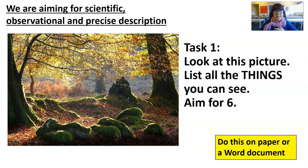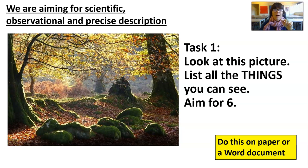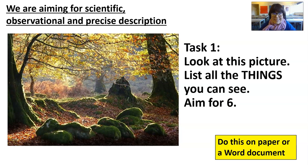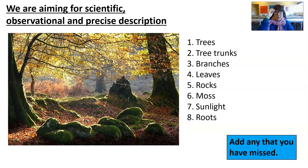You're going to do some tasks as I walk you through this video. There's also a sheet attached to the video description in Microsoft Streams that you can use as well. First, on a piece of paper or a Word document, look at this picture and list all of the things you can see — aim for at least six nouns. Pause the video and write them down. Let's have a look at the answers: trees, tree trunks, branches, leaves, rock, moss, sunlight, roots.